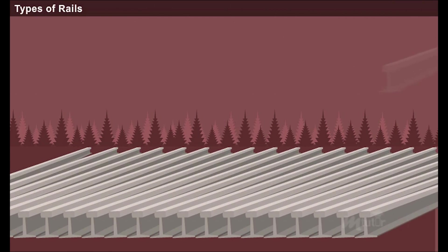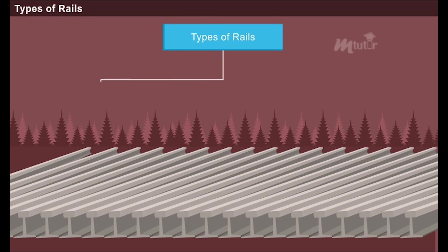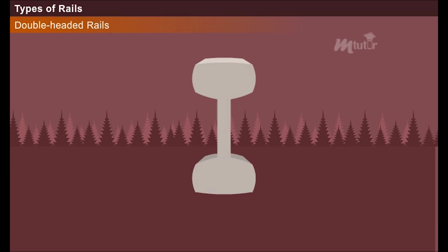Now let's discuss the various types of rails used in the construction of railway tracks. Based on the shape, the rails are classified as double-headed rails, bull-headed rails, and flat-footed rails. The rail section whose head and foot are of same dimension is called as double-headed or dumbbell rail.